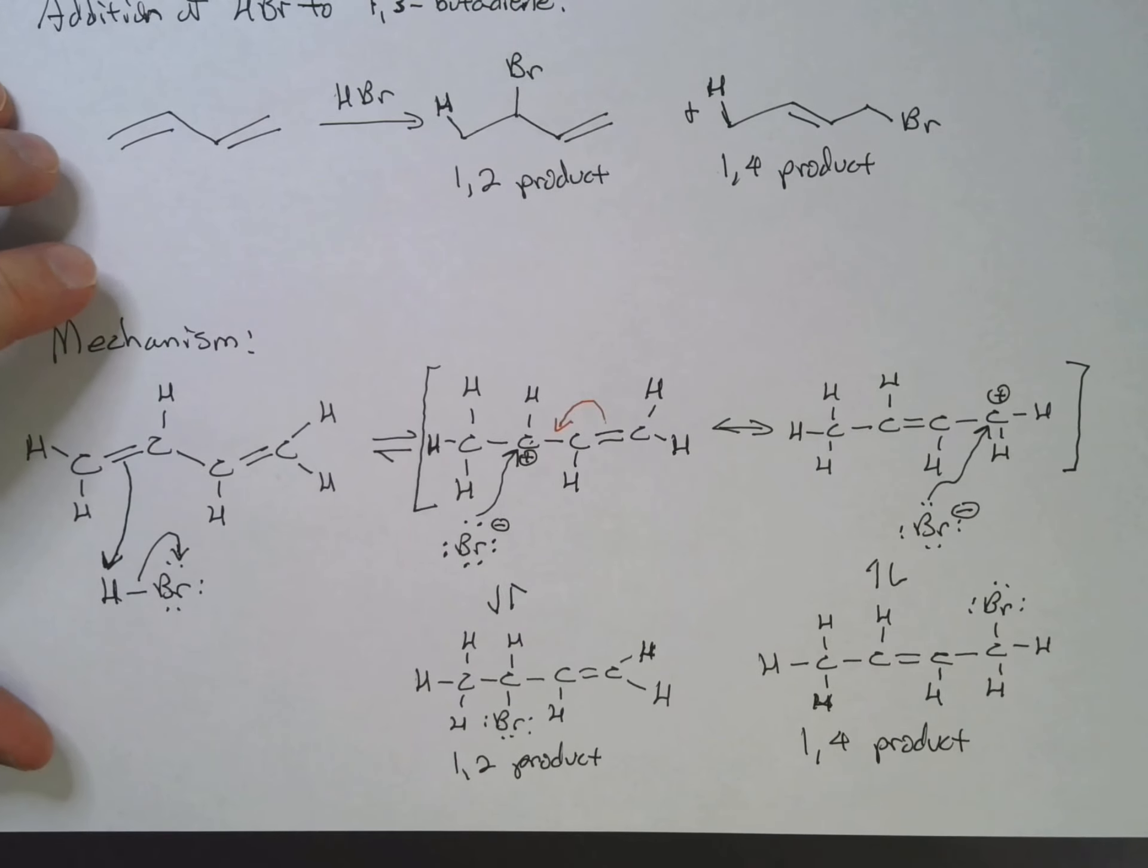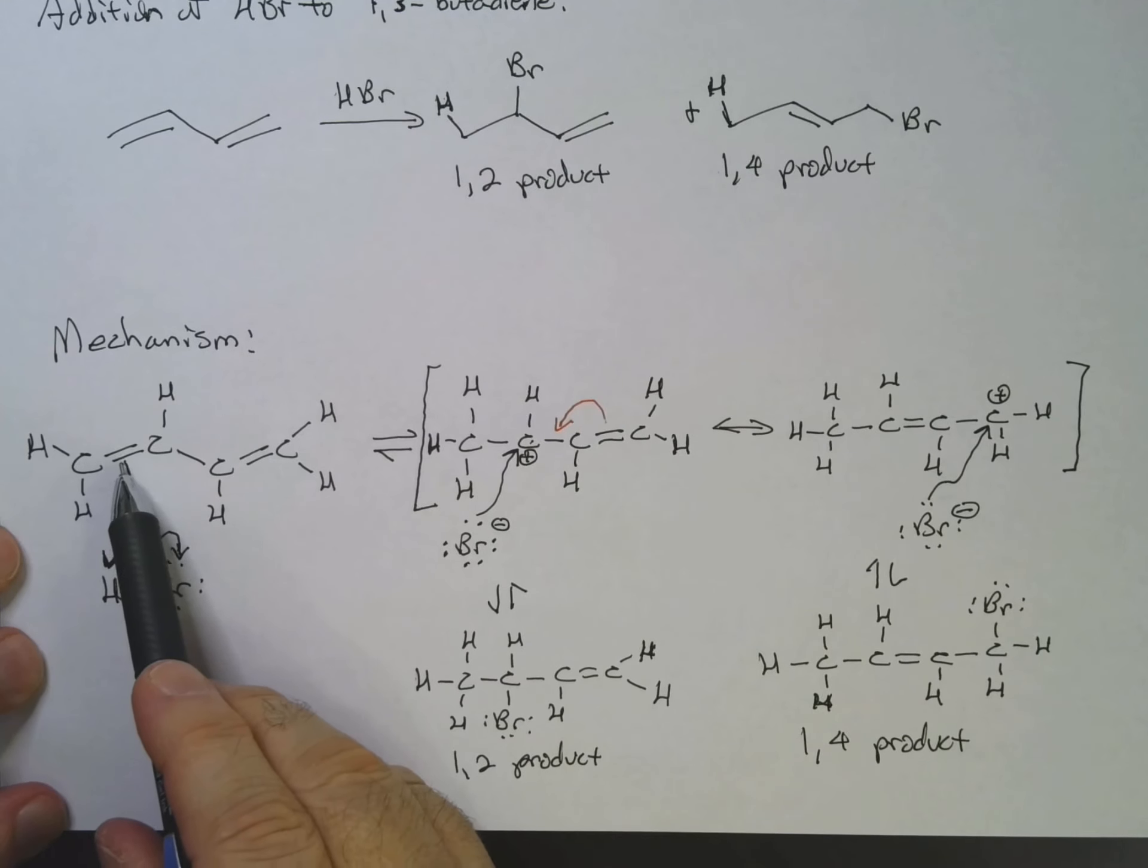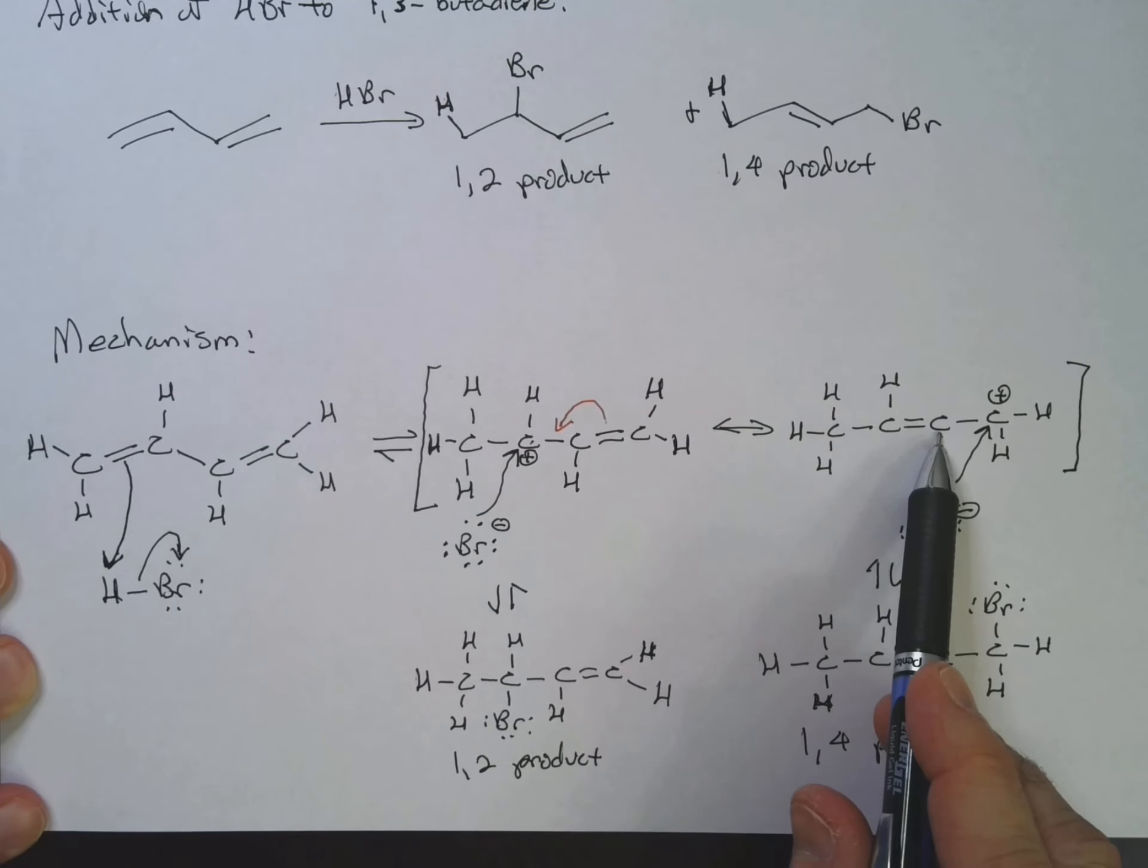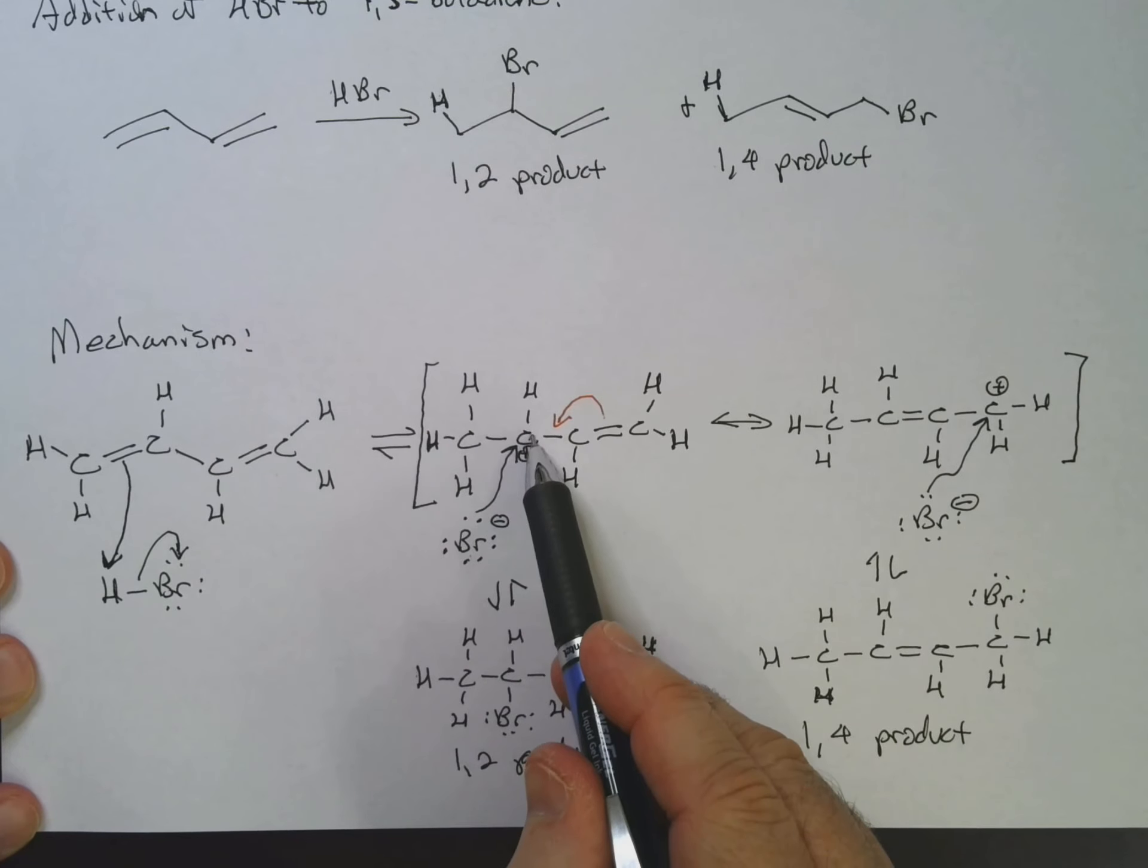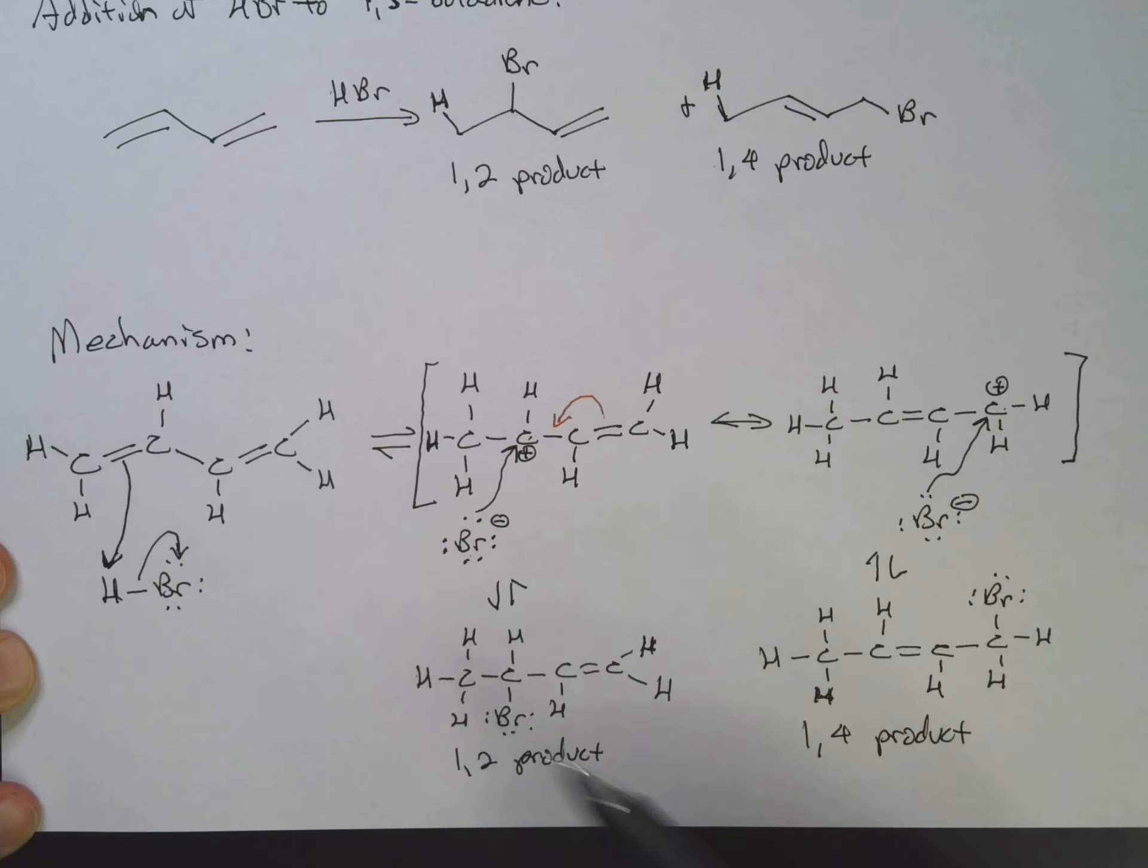So when you're drawing this mechanism, you want to make sure that once you've done the initial protonation, you then draw the appropriate resonance structure. And then which product you get depends on where the bromine adds. Does it add to the carbocation on carbon 2 or the resonance structure of the carbocation on carbon 4? And thus you get the 1,2 product or the 1,4 product.